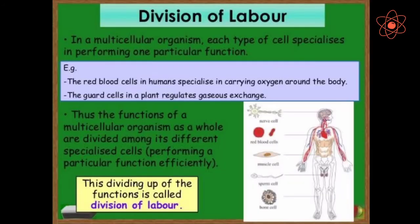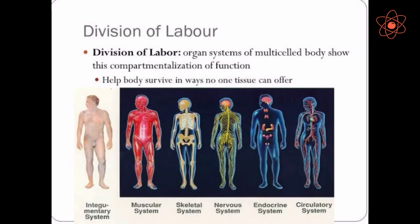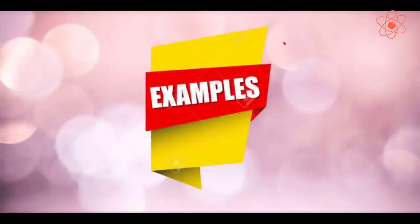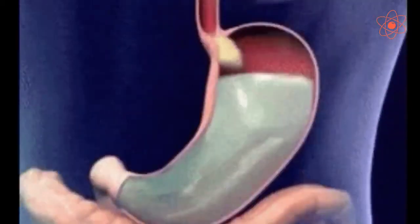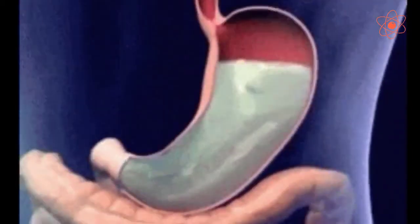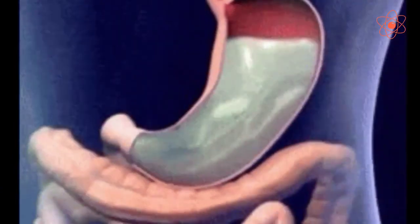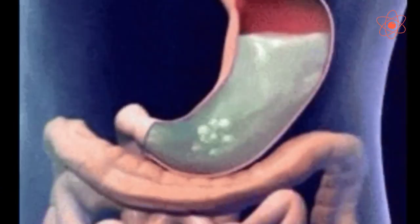All multicellular organisms including human beings show division of labor. It means the different parts of a multicellular organism perform different functions. For example, cells present in the stomach specialize to carry out the digestion process.